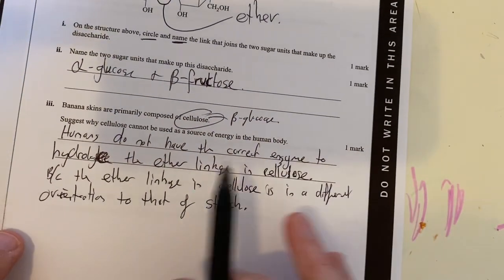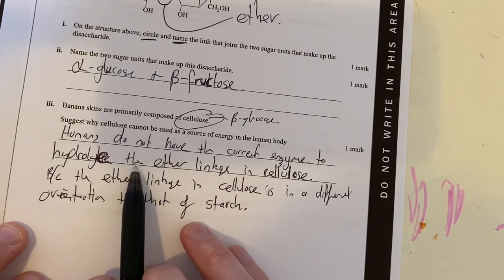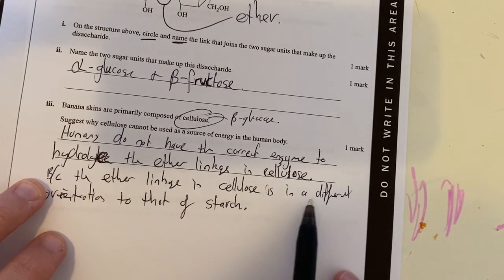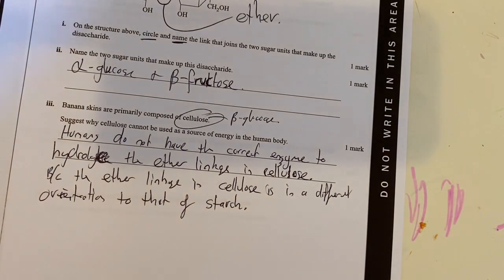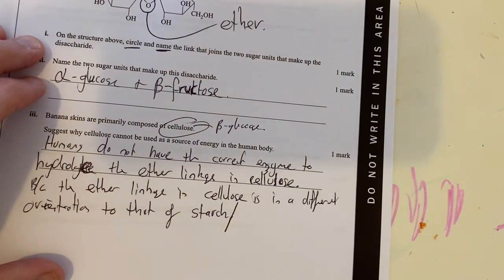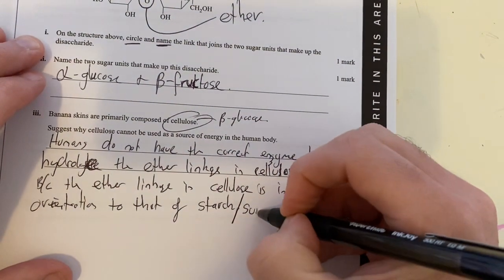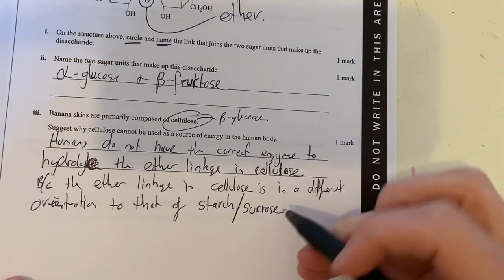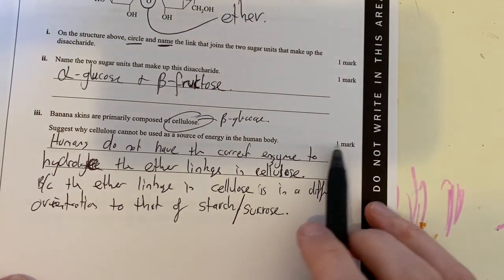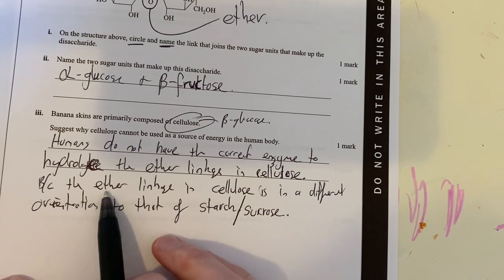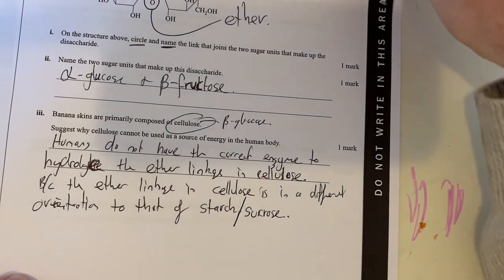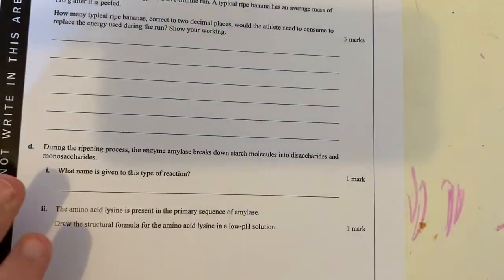I look at this and see the structure of cellulose. That ether linkage is going up and then going down. That is a different orientation to what all the ether linkages in starch and in my disaccharide of sucrose are. Because it's a different orientation, it requires a different enzyme. I've answered this question by saying that humans do not have the correct enzyme to hydrolyze the ether linkage in cellulose. This is because the ether linkage in cellulose is a different orientation to that of starch or sucrose.